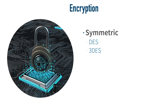Triple DES can be implemented in different ways. One way is to have all three 56-bit keys be different. Another way is for two of the keys to be the same and one different. Or you could have all three be the same 56-bit key, which gives backwards compatibility with DES but is not terribly secure. Overall, Triple DES is considered more secure than DES.